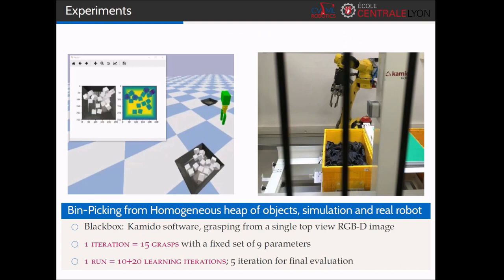As experiment, the application will utilize the grasping of objects in a homogeneous heap from an industrial robotic arm, both in simulation and in reality. The black box method to be optimized is KAMIDO, a proprietary software providing a grasping target for the robot, based on a top-view RGB-D image of the scene.